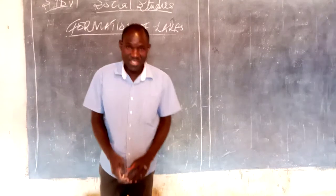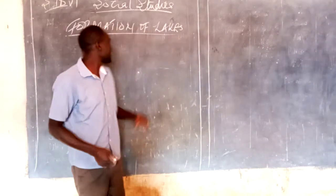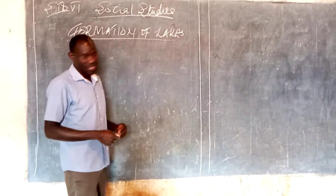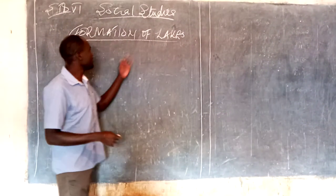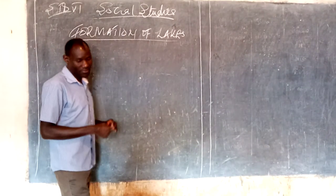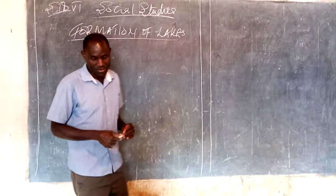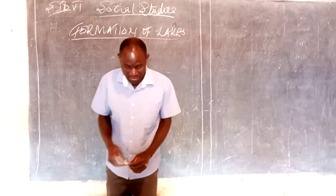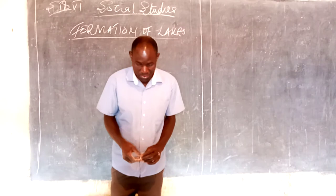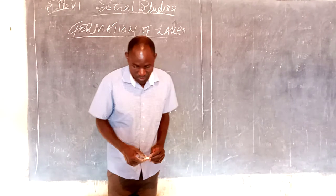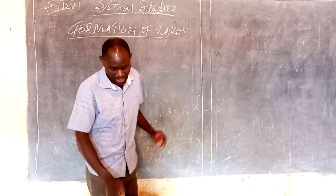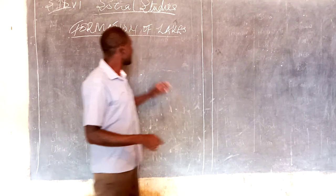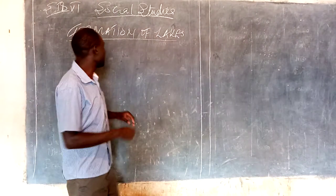Hi guys, today we are going to discuss the formation of lakes. Now before we see how lakes were formed, we are supposed to know what lakes are. Lakes are droughts or depressions on the earth's surface on which water collects. Now, lakes are formed in different ways.